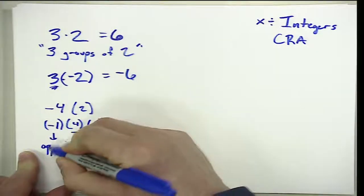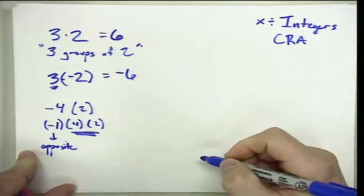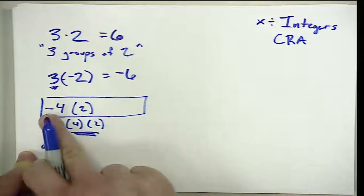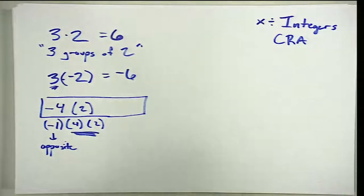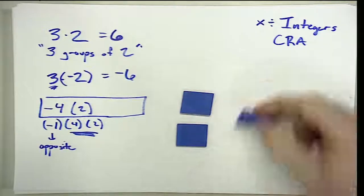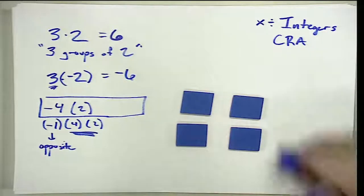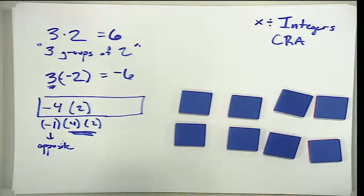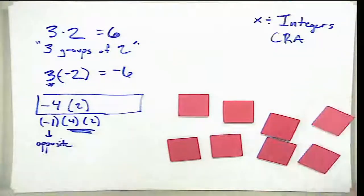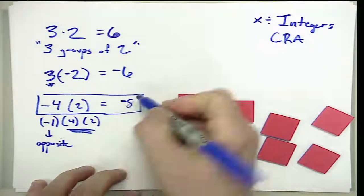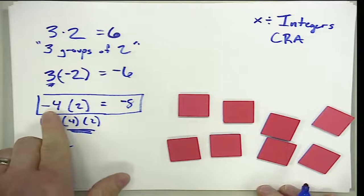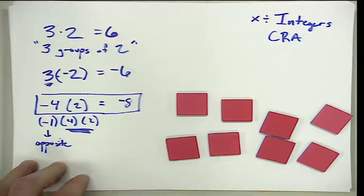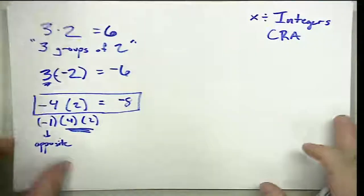We interpret negative four times two as the opposite of four groups of two. We would model four groups of positive two, which gives me a positive eight, but we want the opposite — so the answer is negative eight. We can do that because we're factoring off that negative one from the negative four.